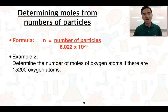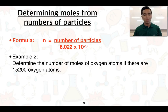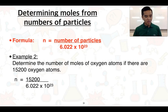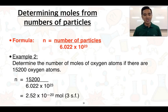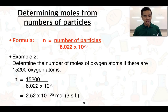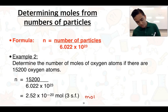For the second example, we determine the number of moles of oxygen atoms if there are 15,200 oxygen atoms. That's much less than the previous example, but the formula doesn't change. We state that the number of moles equals the number of particles present — 15,200 oxygen atoms — divided by the number present in one mole. This gives an answer of 2.52 times 10 to the negative 20 mol, to three significant figures. Note that the unit for moles is written as 'mol', similar to how 'cm' abbreviates centimeters.